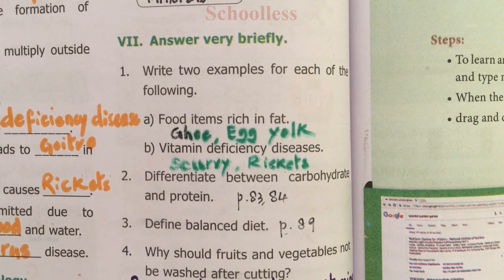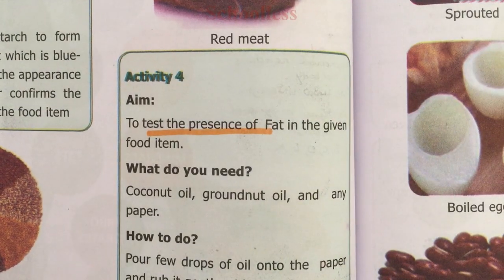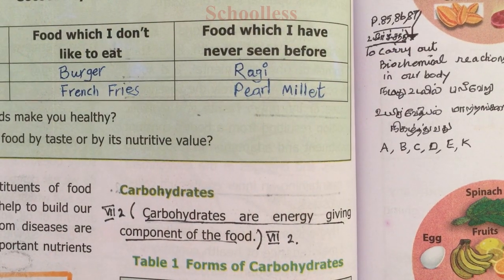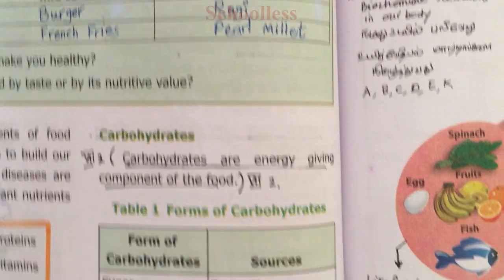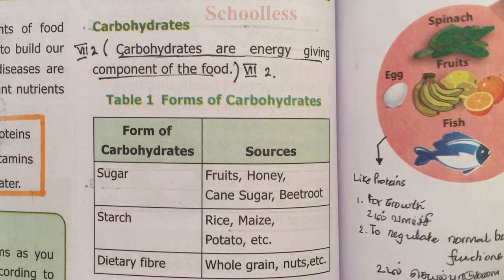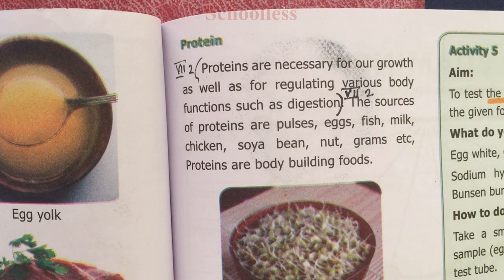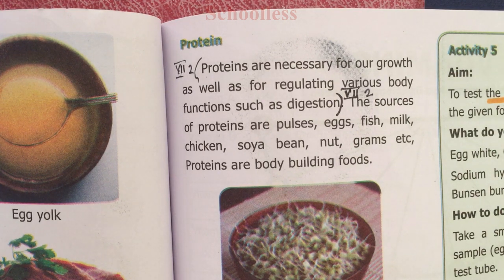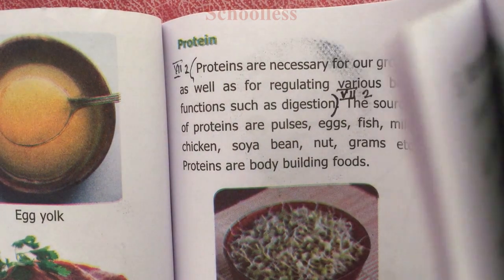Question Two: Differentiate between carbohydrate and protein. Carbohydrates are energy-giving components of food; there are three forms — sugar, starch, and dietary fiber. Proteins are necessary for growth and regulating various body functions such as digestion, and proteins are body-building foods.